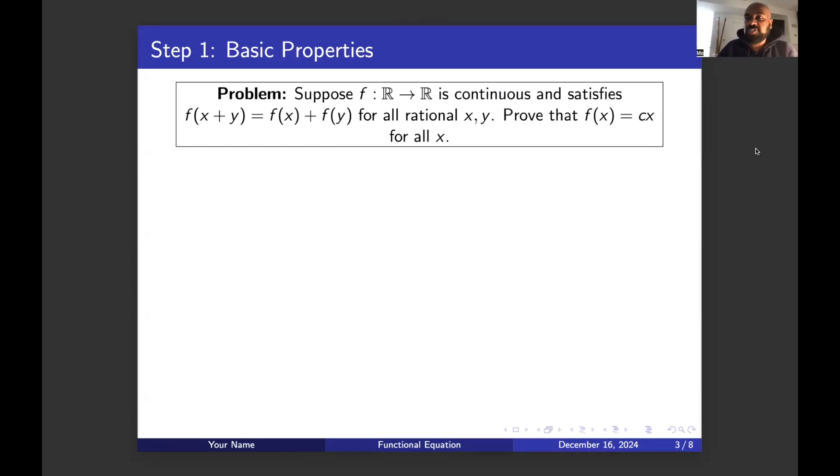First, let's do some evaluation at zero. So you notice that if we plug in zero for x and zero for y, we'll get that f of zero is itself f of zero plus f of zero. So if we subtract f of zero on both sides, we'll get that f of zero is itself zero. Okay, great.